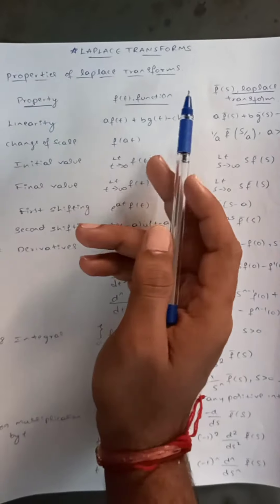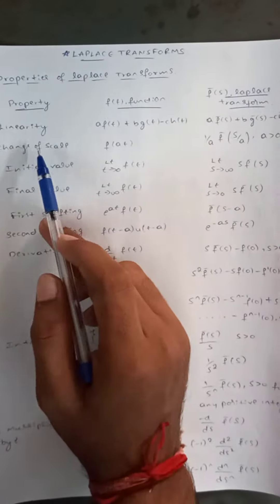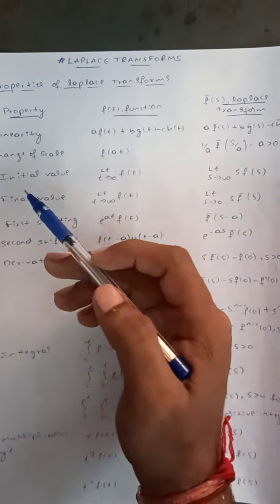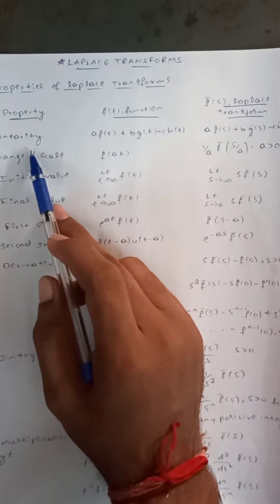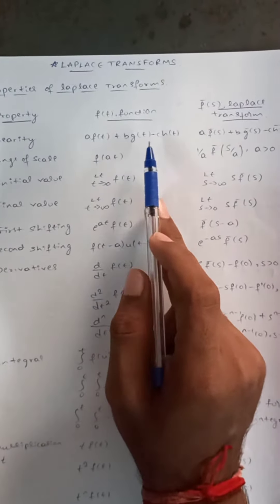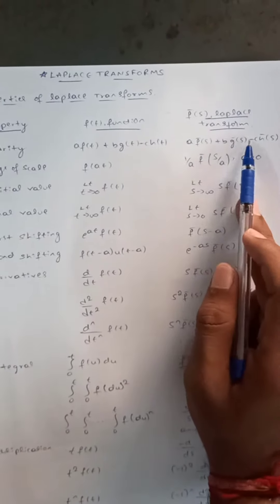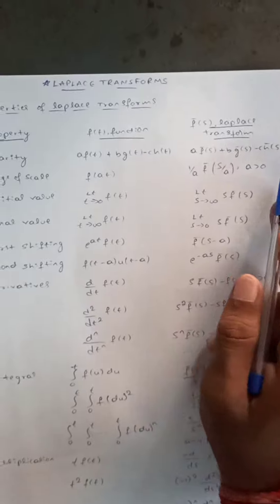Let us discuss the properties of Laplace transforms. Here are three columns: the first one is properties, the second one is f(t) that is the time-domain function, and f̄(s) that is the Laplace transform.